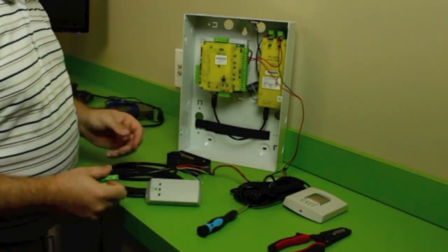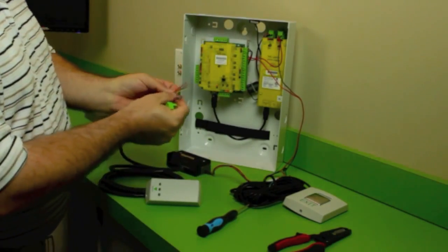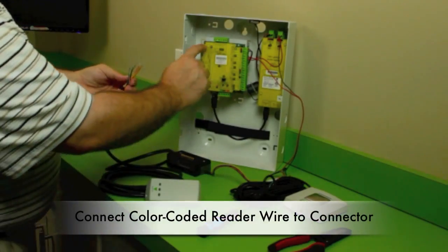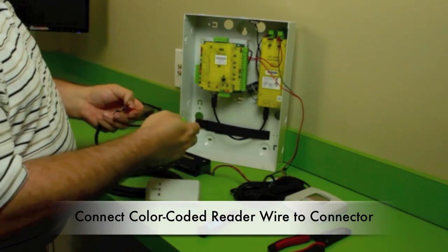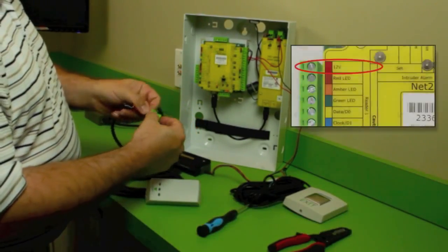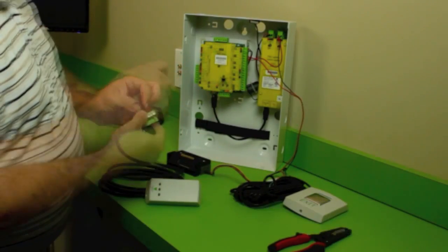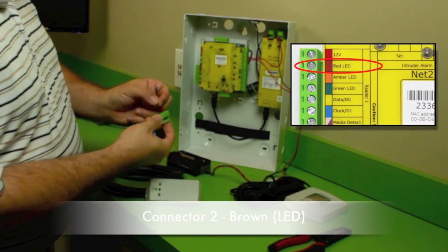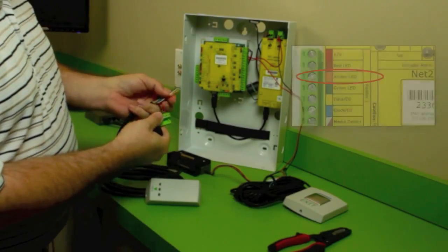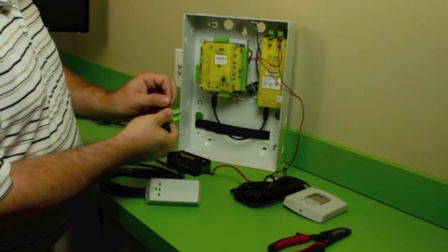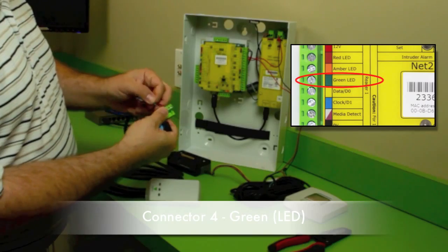Same thing, pull the plug. Our readers are color-coded. They match the labels right on the Net2 Plus. So you just take each wire and look at your label. So your first wire is red. Your next color wire will be a brown wire. Then an amber or orange wire. Then you will put your green wire in next.